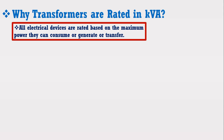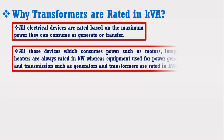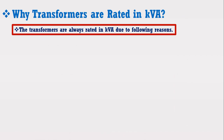All electrical devices are rated based on the maximum power they can consume, generate, or transfer. All those devices which consume power, such as motors, lamps, and heaters, are always rated in kW, whereas equipment used for power generation and transmission, such as generators and transformers, are rated in kVA. The question arises: why are transformers always rated in kVA and not in kW?